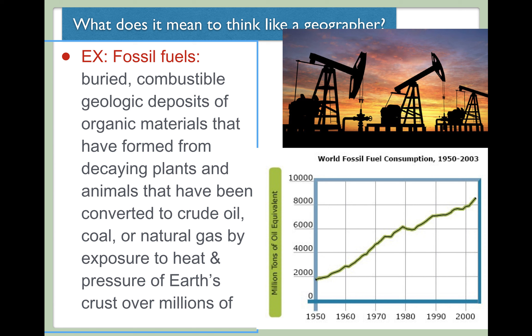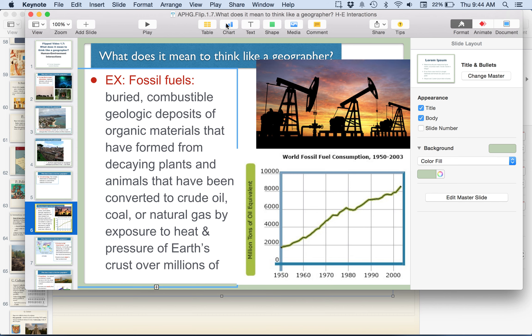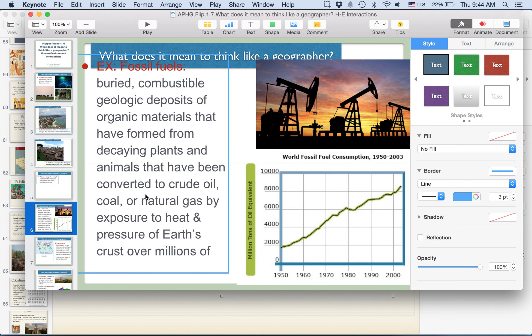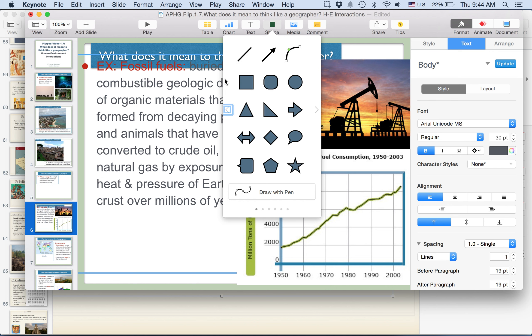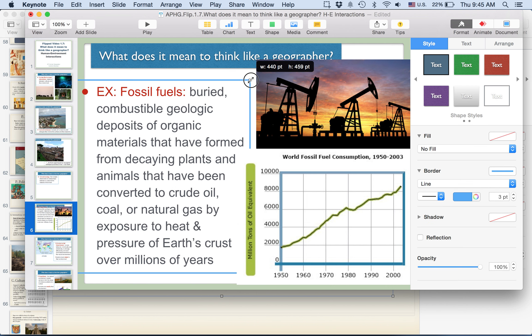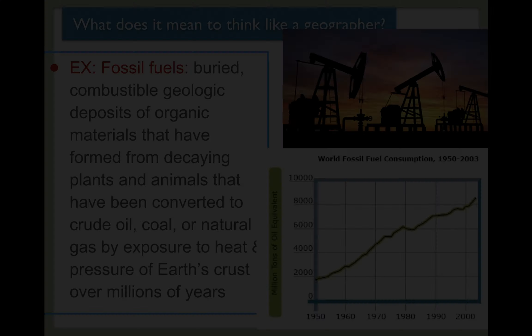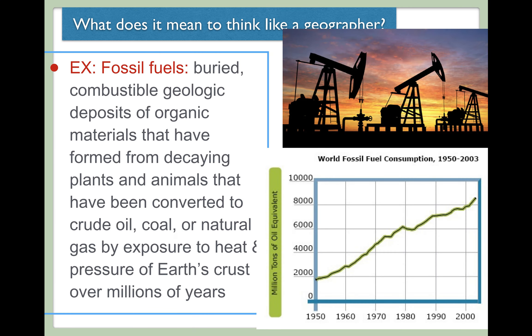Let's talk about some examples of these interactions. One thing we look at when studying how humans adapt to, modify, and are influenced by their natural world is fossil fuels. Fossil fuels are buried, combustible, geologic deposits of organic materials formed from decaying plants and animals that have been converted to crude oil, coal, or natural gas by exposure to heat and the pressure of Earth's crust over millions of years.